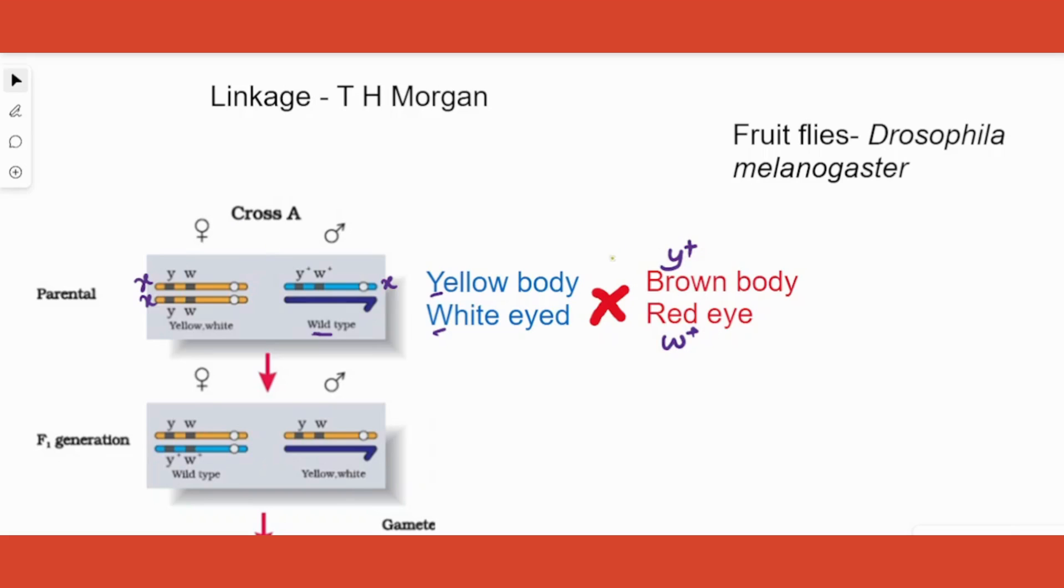Morgan crossed these two organisms: a female having yellow body and white eye, with a male having brown body and red eye. He expected that the F1 generation, like in Mendelian cross, would show the dominant trait in all progenies produced. But that's not what happened. Instead, both were there in equal amount but reversed - the female had wild type (brown body and red eye) and the male had yellow and white.